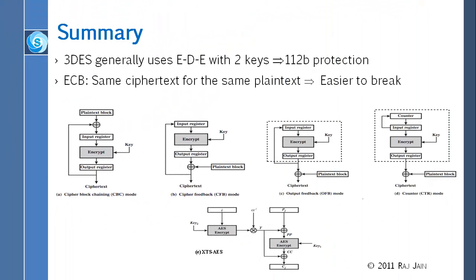Let's give a graphical summary of all the modes. First, 3DES uses EDE with 2 keys, which gives close to 112-bit protection — that is what you get with 3 keys as well. If you use just 2DES you get half of that, so the best compromise for 3DES is EDE with 2 keys. The first mode was ECB, Electronic Codebook, where you take each block and use the same key to get a ciphertext — not recommended because it is very easy to break.